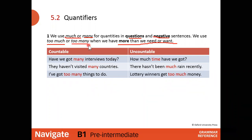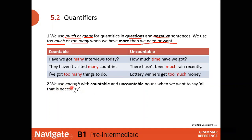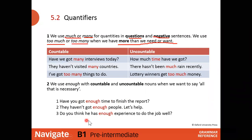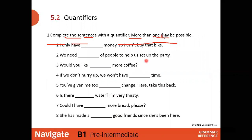We use 'enough' with countable and uncountable nouns when we want to say 'all that is necessary' — you are satisfied with the amount. For example: 'Have you got enough time to finish the report?' — 'enough' plus 'time,' uncountable. 'They haven't got enough people to help' — 'enough' plus 'people,' countable plural. 'Do you think he has enough experience to do the job well?' — 'enough' plus 'experience,' uncountable.